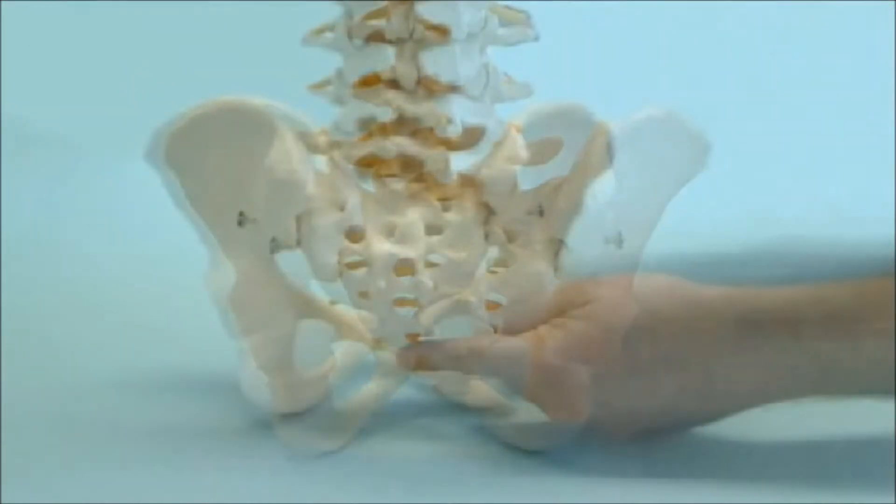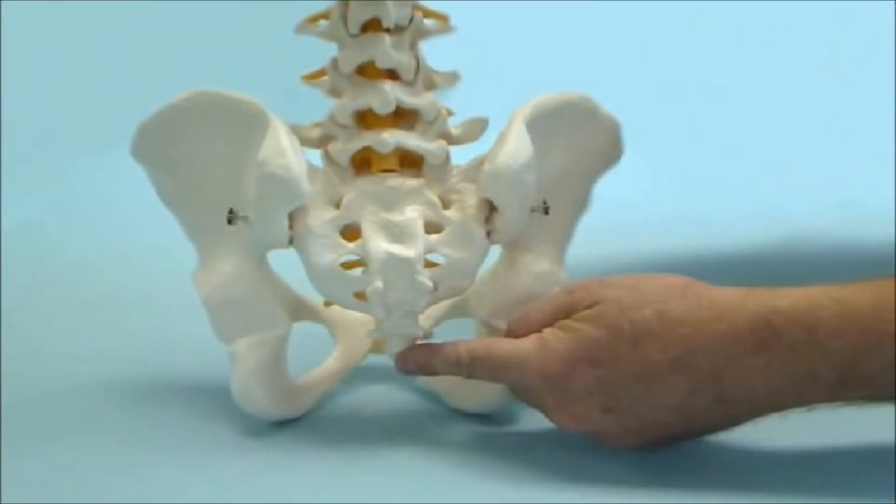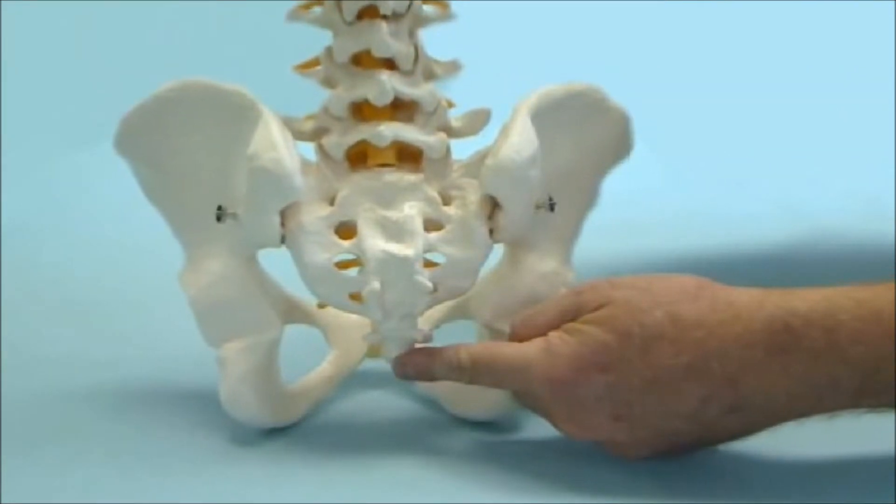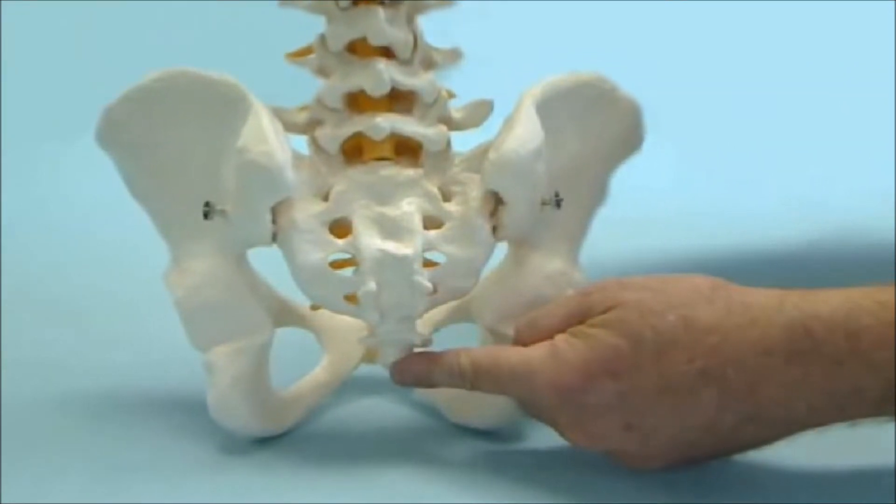This is a replica of the human spine, and this little guy right here is called the coccyx in medical terms, but in layman's terms, it's the bottom of your tailbone.